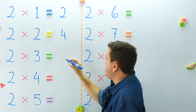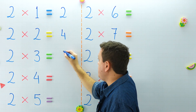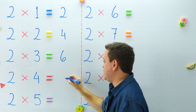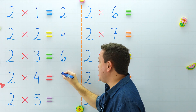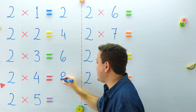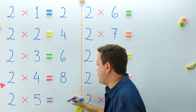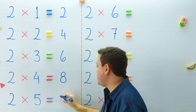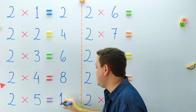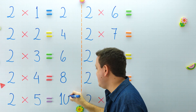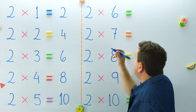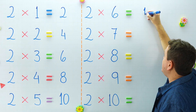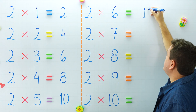2 times 3 equals 6. The next one: 2 times 4 equals 8. Over here, 2 times 5 equals 10.